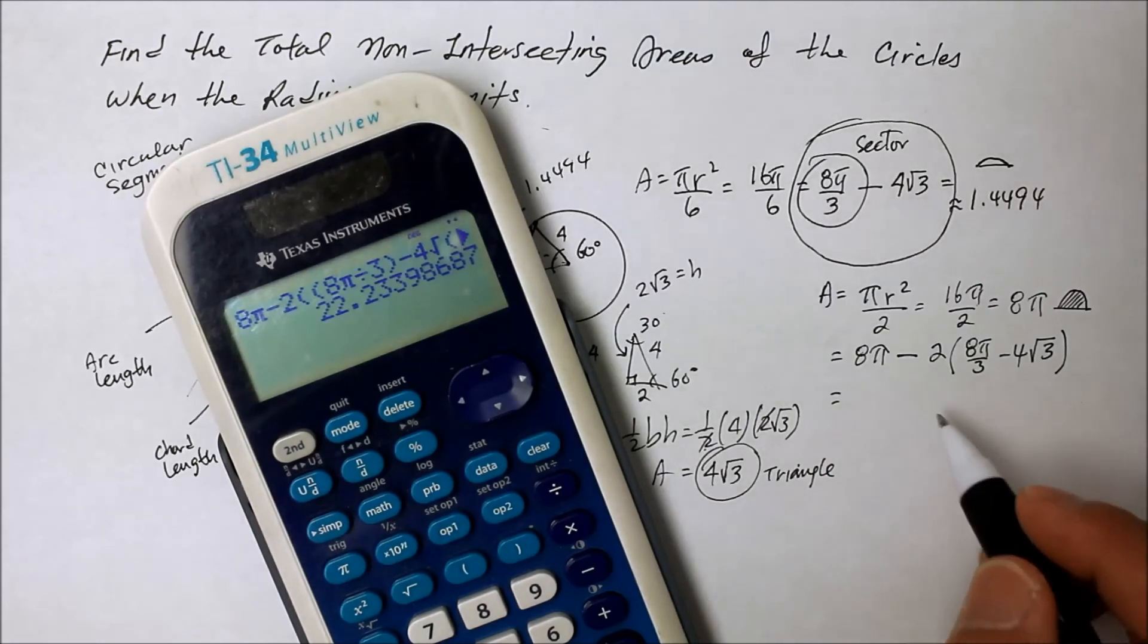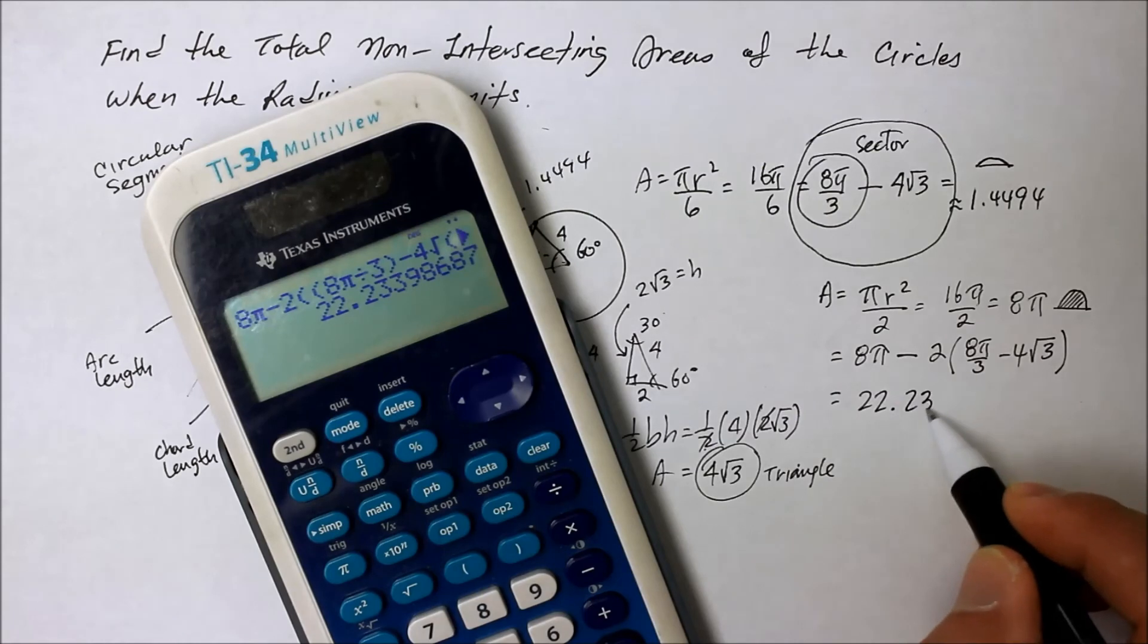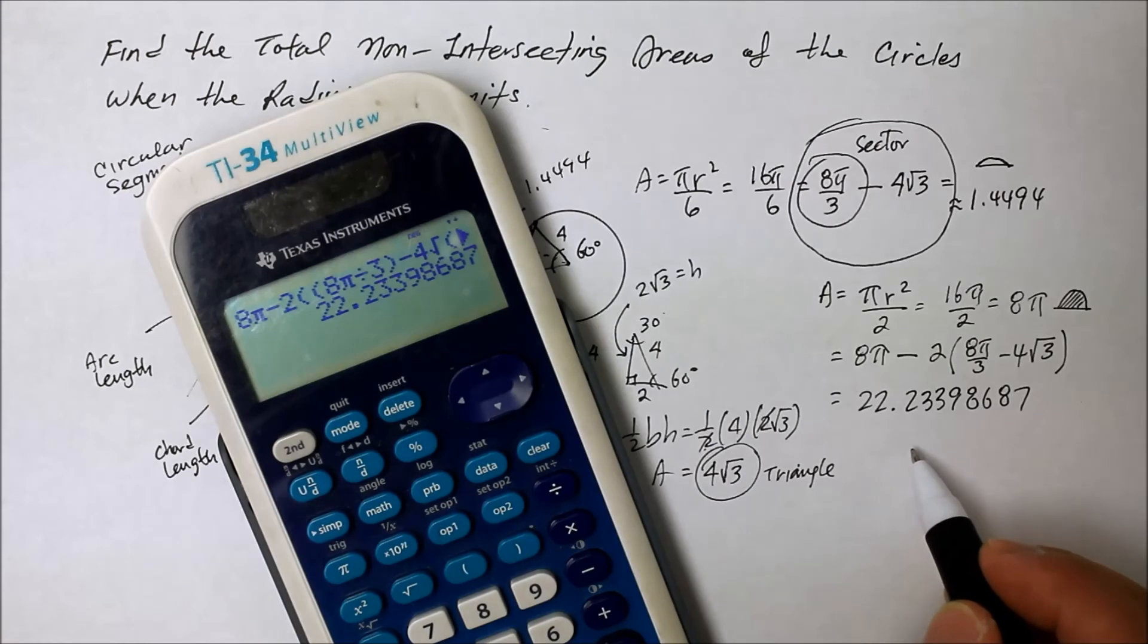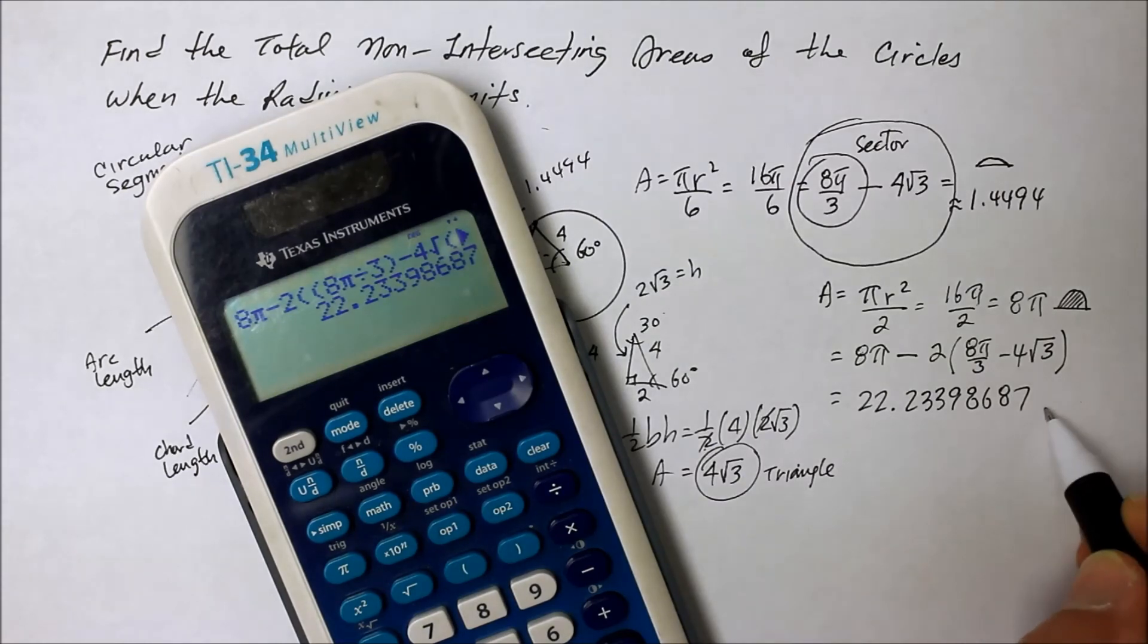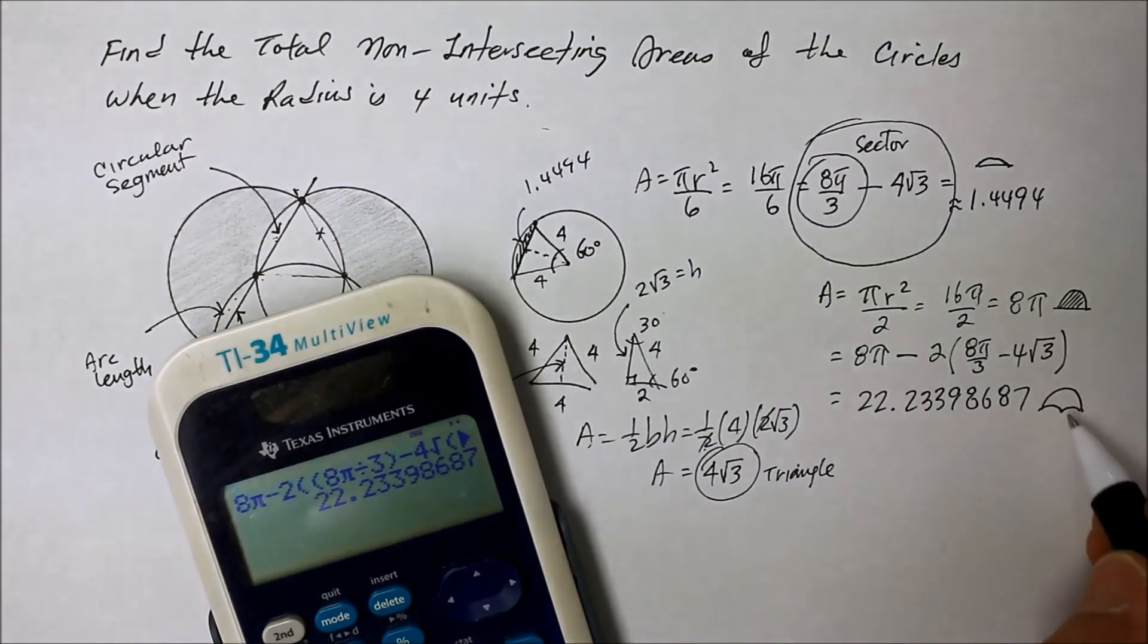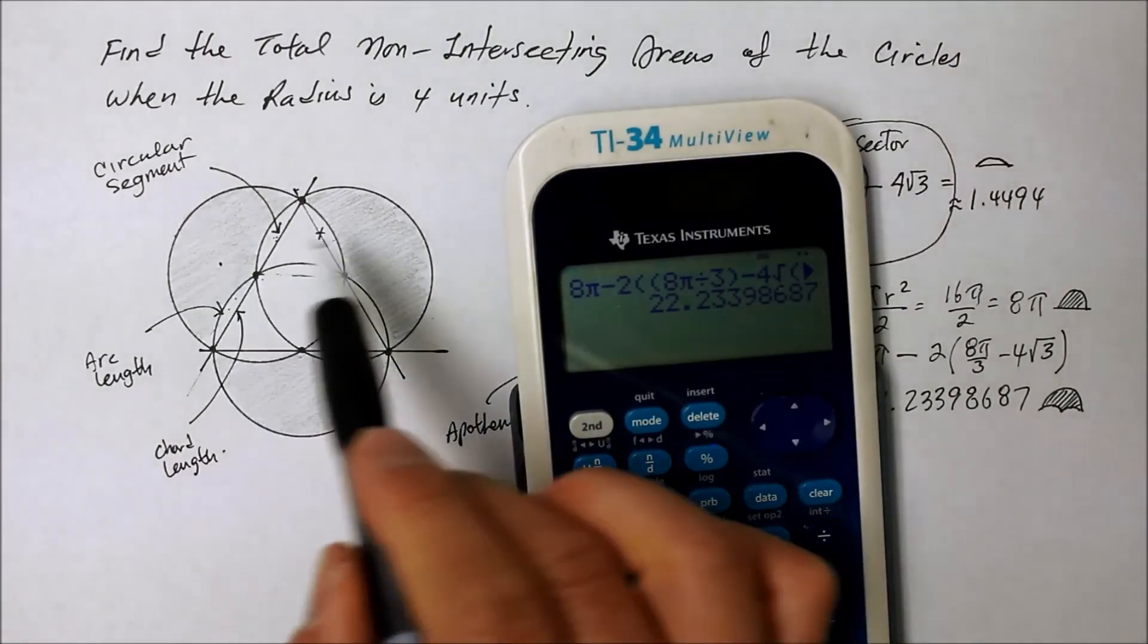I get 22.23398687. What is that? That is semi-circle without those two little circular segments. However, how many do I have of those? I have one, two, three.